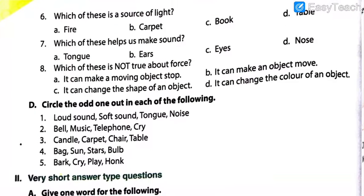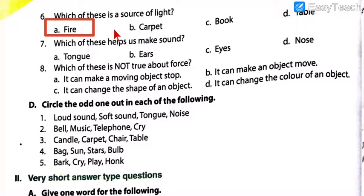Next, page 112. Number six: which of these is a source of light? Options: fire, carpet, book, or table. Source of light means a luminous object. We get light from fire, but not from a table, book, or carpet. So fire is the correct answer. Number seven: which of these helps us make sound? Options: tongue, ears, eyes, or nose. Obviously the correct answer is tongue - with the help of our tongue we can speak, and without it we cannot speak properly.